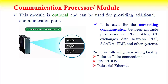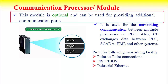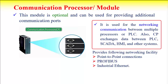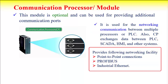The communication processor or communication module is optional — used only when required. These modules provide additional communication ports to communicate with different racks, remote I/O systems, or other systems. It is used for networking communication between multiple processors for the PLC, and also exchanges data between the PLC, SCADA, human machine interface, and other systems. This communication module provides different networking facilities like point-to-point communications, PROFIBUS communications, industrial Ethernet communications, etc.